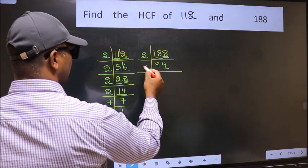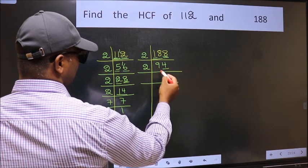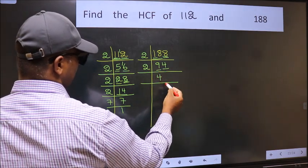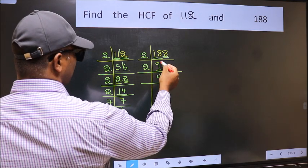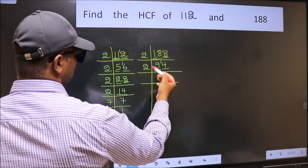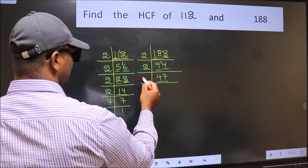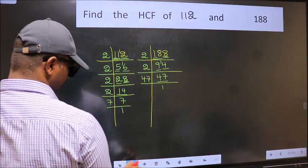Last digit 4, even, so take 2. First number 9, a number close to 9 in the 2 table is 2 times 4 equals 8. 9 minus 8 is 1. 1 carried forward gives 14. When do we get 14 in the 2 table? 2 times 7 is 14. Now 47 is a prime number, so 47 times 1 is 47.